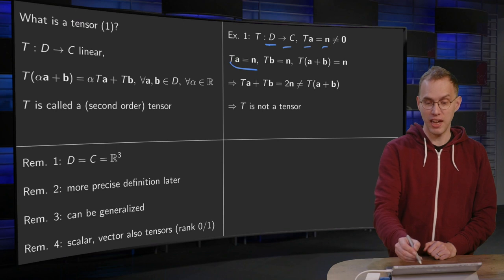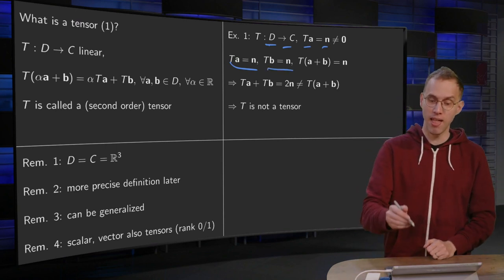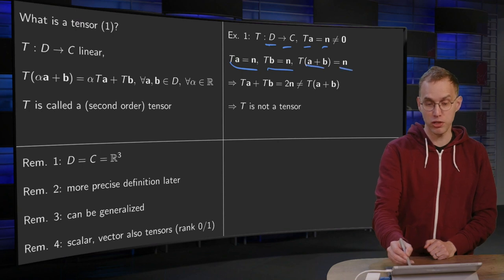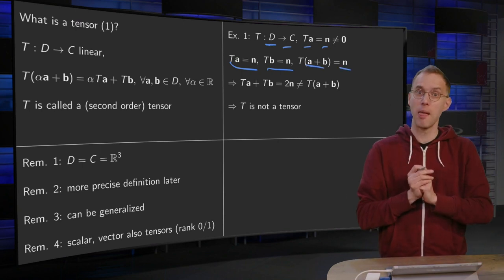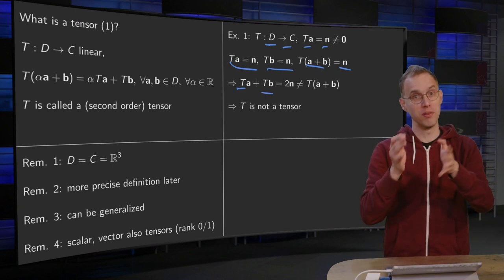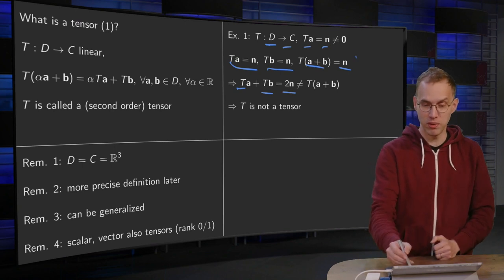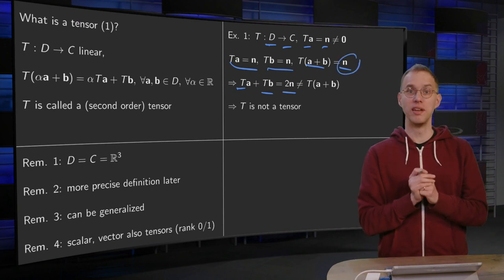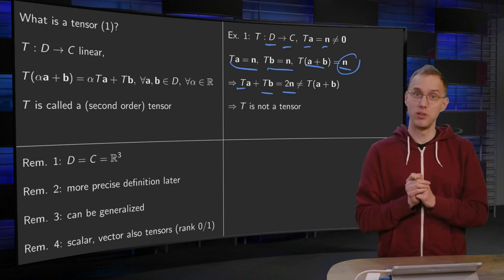It's always, you move everything to the same n. So the T of A plus B will also be n, because A plus B will also be mapped to n. Now what happens? The T of A plus the T of B equals n plus n equals 2n. And that's not equal to n, the T of A plus B. So this T is not a tensor because it's not a linear mapping.